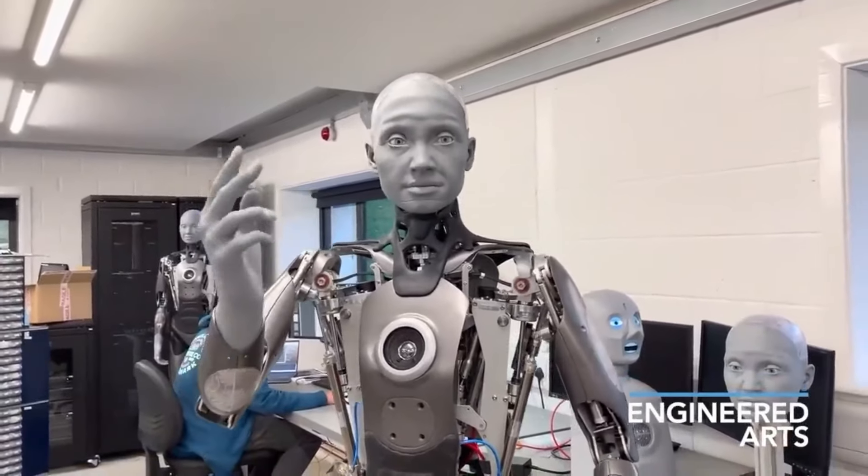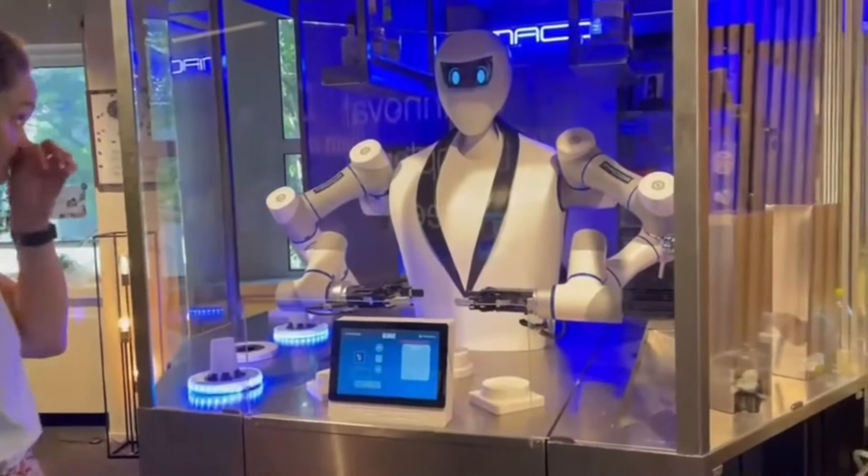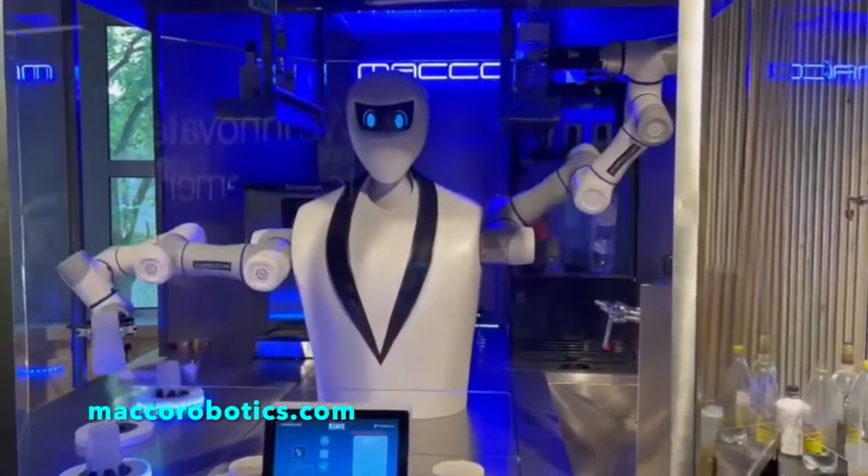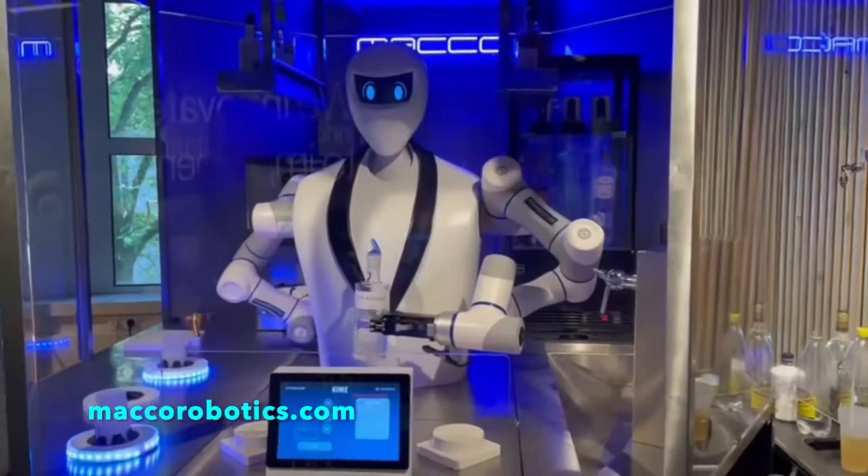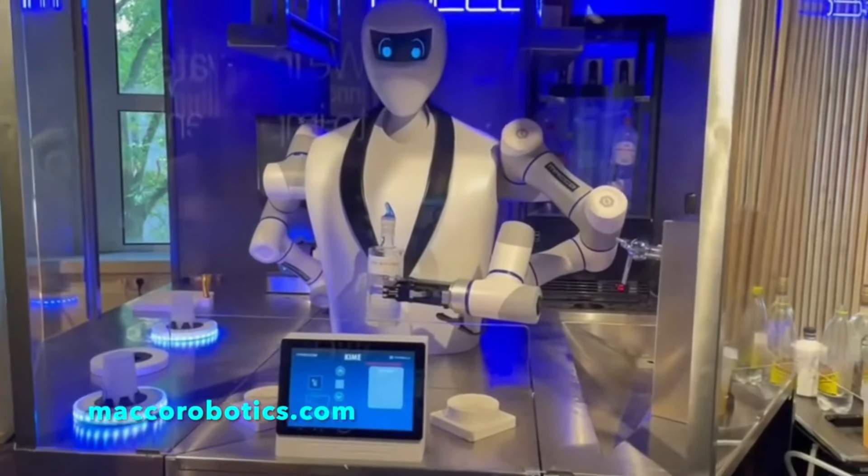Number 9. Kim. A towering 2-meter tall humanoid robot designed to redefine the dining experience. With its articulated arms and advanced capabilities, Kim is not just a robot, but a revolutionary force in culinary innovation.